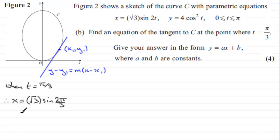Now the sine of 2π/3 is the same as √3/2. √3/2 times √3 gives you simply 3/2. And when it comes to y, we've got y equals 4cos²(π/3).